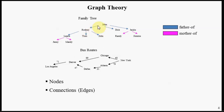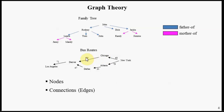Sometimes in graphs you have a semantic relationship associated with these arrows. In this family tree graph, we have a 'father of' relationship and a 'mother of' relationship. Sometimes with graphs you have scalar values associated with the connections. In this bus routes example, the scalar value represents a cost of going from one city to another.